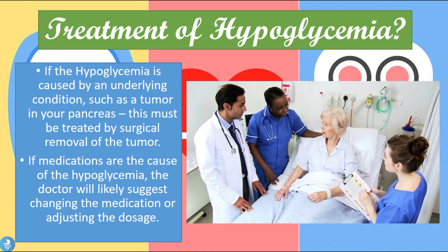If the hyperglycemia is caused by an underlying condition such as a tumor — for example an insulinoma in the pancreas — this must be treated by surgical removal of the tumor. And if medications are the cause of hyperglycemia, the doctor will likely suggest changing the medication or adjusting the dosage.